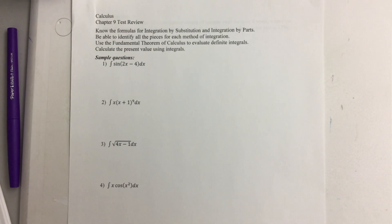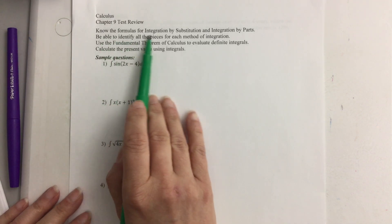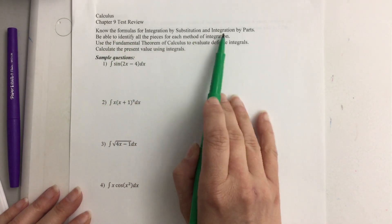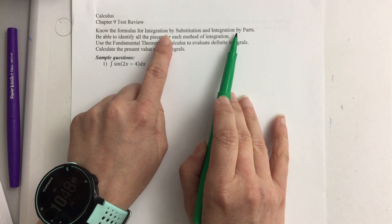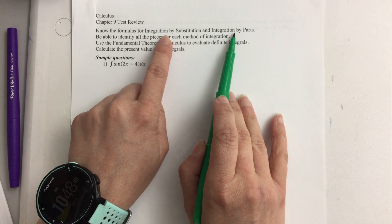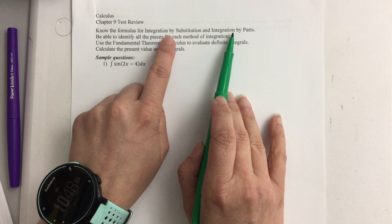All right guys, here it is — your last chapter test review for calculus. We're going to review for the Chapter 9 test. You do need to know the formulas for integration by substitution and integration by parts. Normally, if this were an in-classroom test, you would have had to have these memorized. This is an at-home test, so feel free to use your notes and your books.